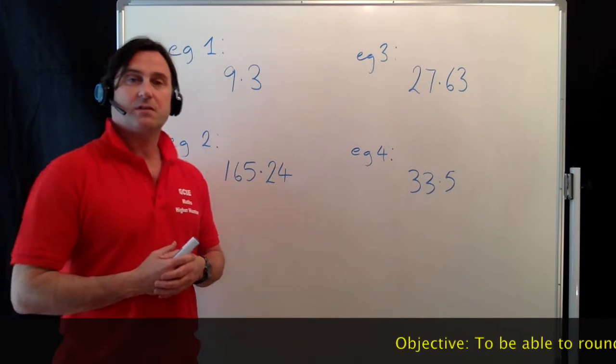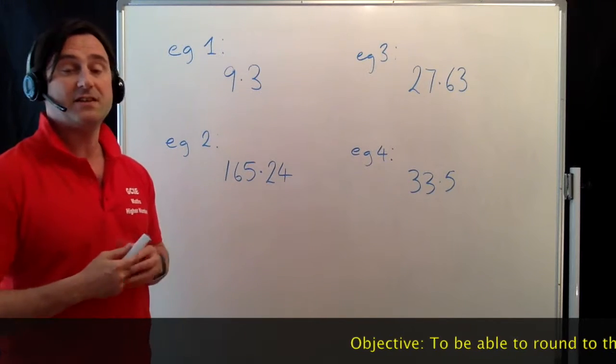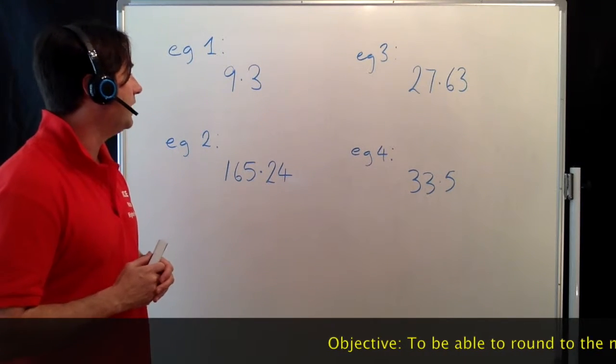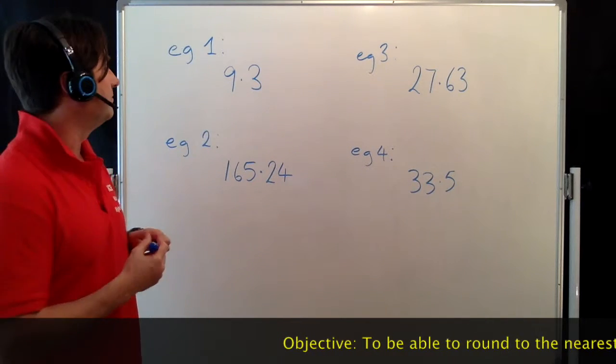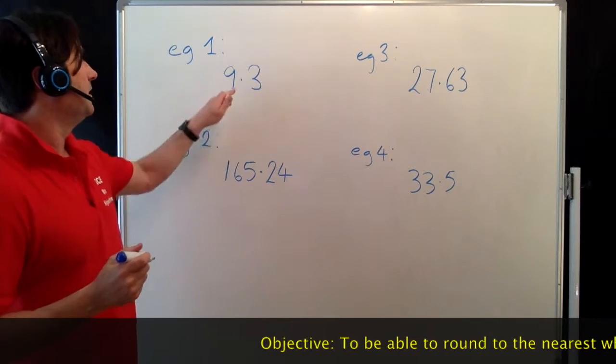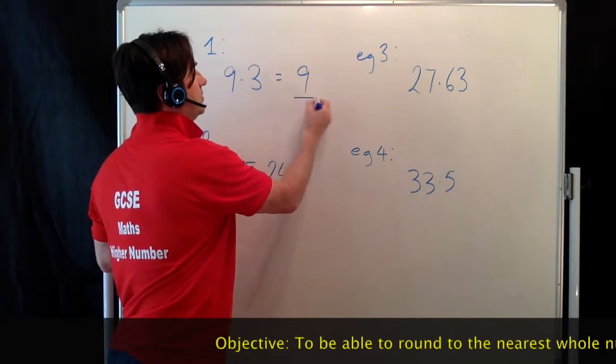We've got four examples here to look at. The first one, 9.3. Now remember, we're rounding this to the nearest whole number. Because the point 3 is closer to 0 than it is to 10, this rounds to 9 to the nearest integer.